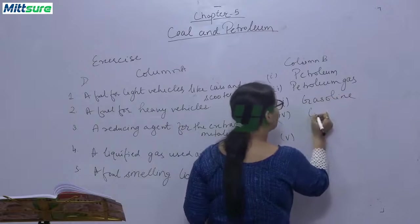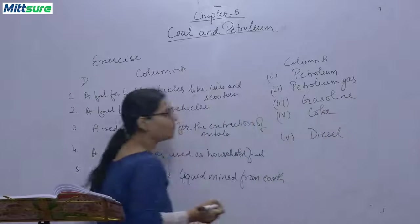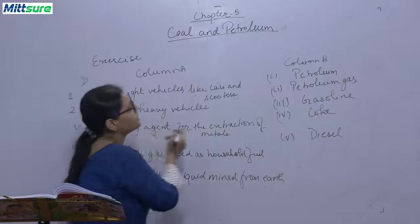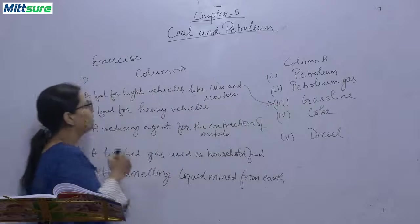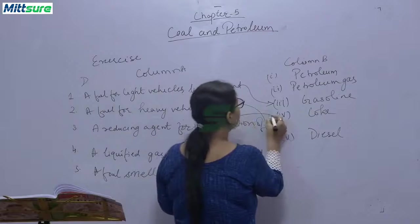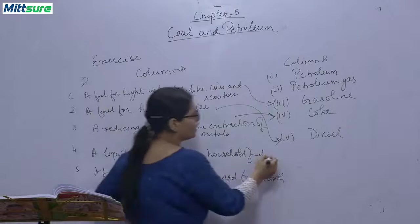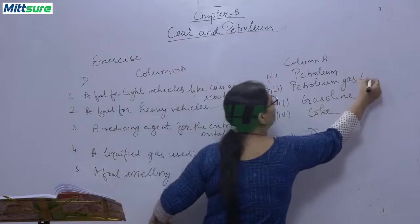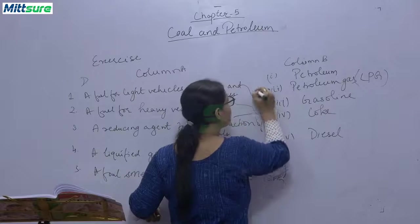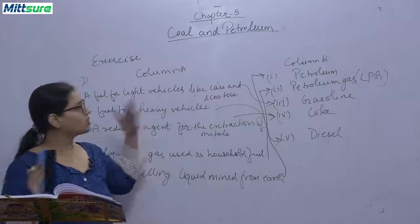Now we will be matching the column A with column B. Fuel for light vehicles is gasoline. Fuel for heavy vehicles is diesel. A reducing agent for the extraction of metal is coke. A liquefied gas used as a household fuel is petroleum gas as we use it as a form of LPG. And a foul smelling liquid mined from earth is petroleum. So this is the match the following, match the column A with column B.